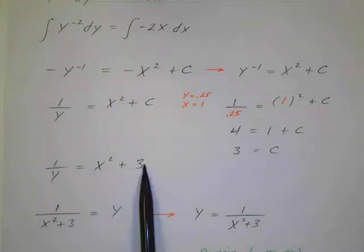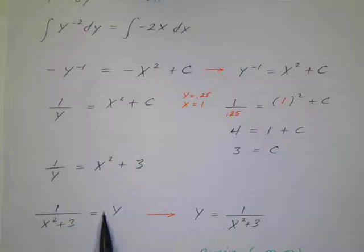x squared plus 3. So I can multiply by y and divide by x squared plus 3. So I've got 1 over x squared plus 3 equals y. Just flip them. y equals 1 over x squared plus 3.